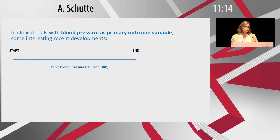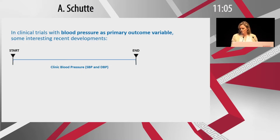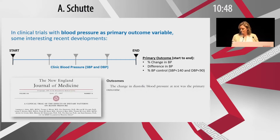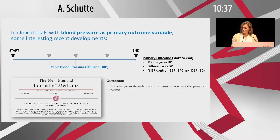I wanted to speak on what we have been used to over many years since clinical trials started using blood pressure as an outcome variable. Most trials use clinic blood pressure as a primary outcome — blood pressure is measured at the beginning and end of the trial, and sometimes in the middle, but those are not used for the primary outcome. It's usually percentage change, difference in blood pressure, or percentage blood pressure control as the primary outcome. One well-known example is the DASH trial in 1997, which used change in diastolic blood pressure at rest as the primary outcome.